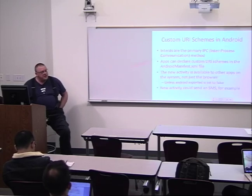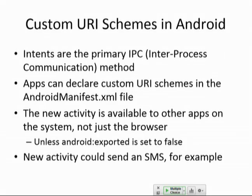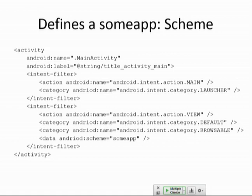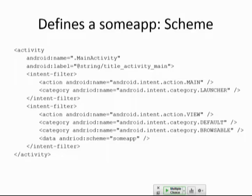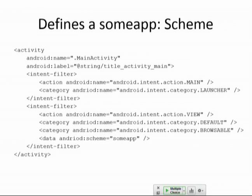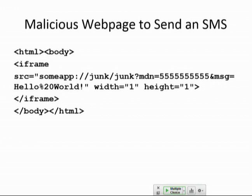On Android, you use intents primarily for these things, but you can also declare custom URI schemes, which makes them available to every app on the device — unless you have set Android 'exported' to prevent it. An activity can define a custom scheme like 'someapp:' — anything starting with 'someapp:' will be received by that activity, which can take some action based on that request. Here's a malicious page example to send an SMS: if you have a vulnerable app, you send it a message to a target number with content like 'hello world,' and when someone views this page, it sends the SMS.